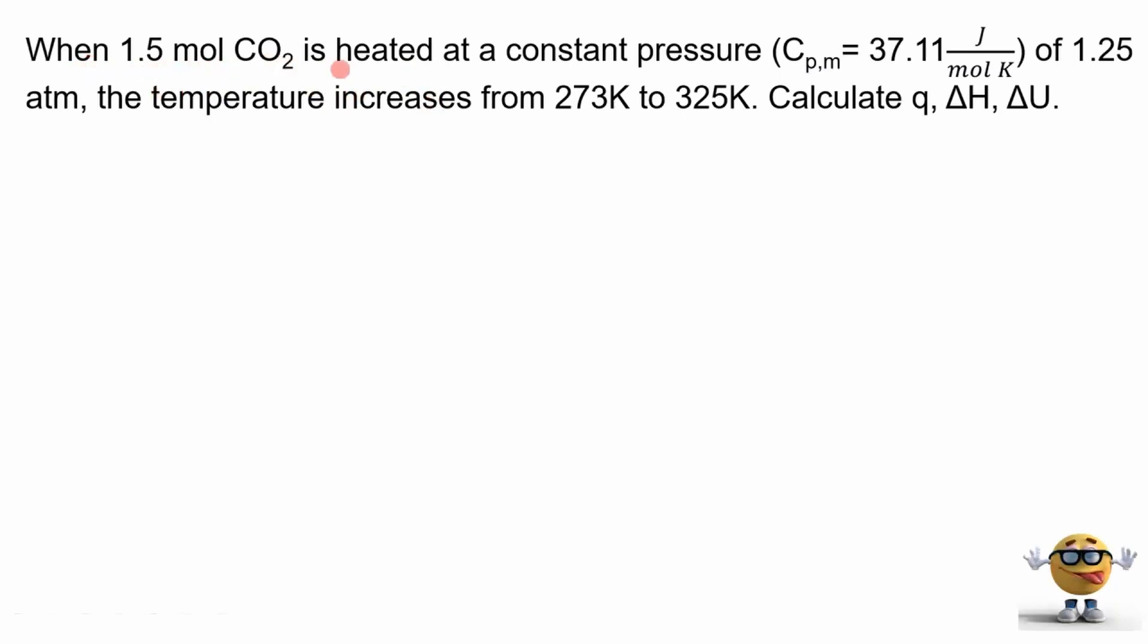When 1.5 moles of CO2 is heated at a constant pressure, and we're given the heat capacity at constant pressure, the molar heat capacity is 37.11 joules per mole Kelvin of 1.25 atm, so there's our pressure. The temperature increases from 273 to 325 Kelvin, and we want to calculate these variables right here.